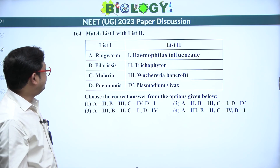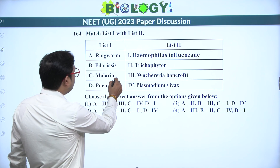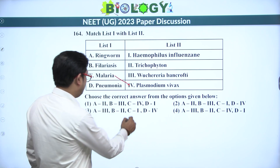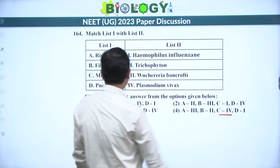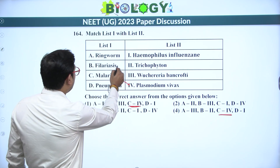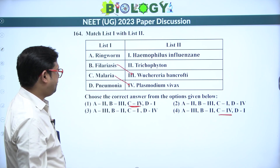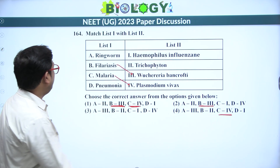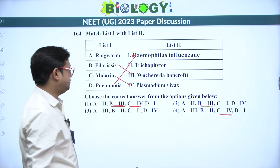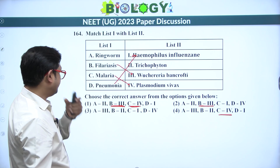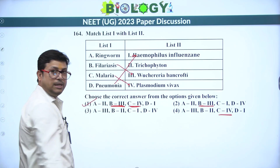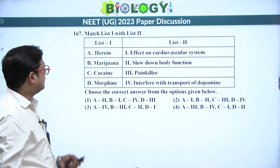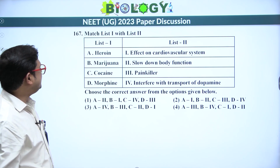Next: match the column for diseases and pathogens. Malaria — Plasmodium vivax, C is 4. Filaria — Wuchereria bancrofti, B is 3. Pneumonia — Haemophilus influenzae, D is 1. Ringworm — Trichophyton. Answer is 1.